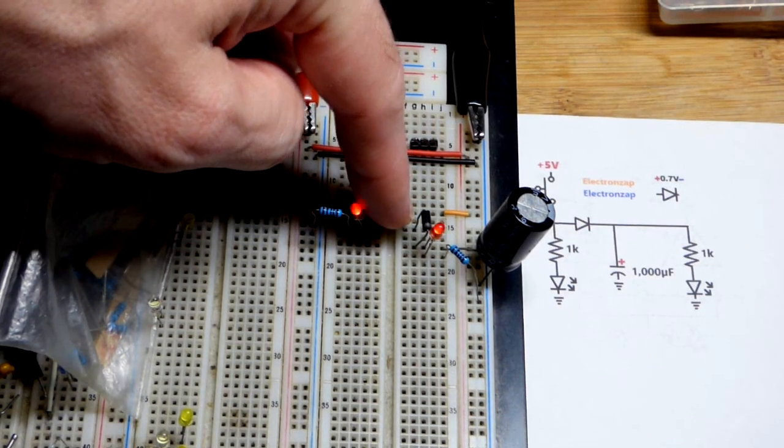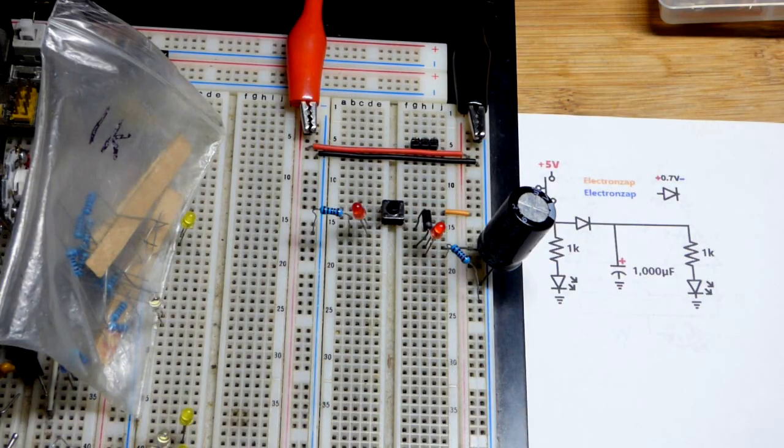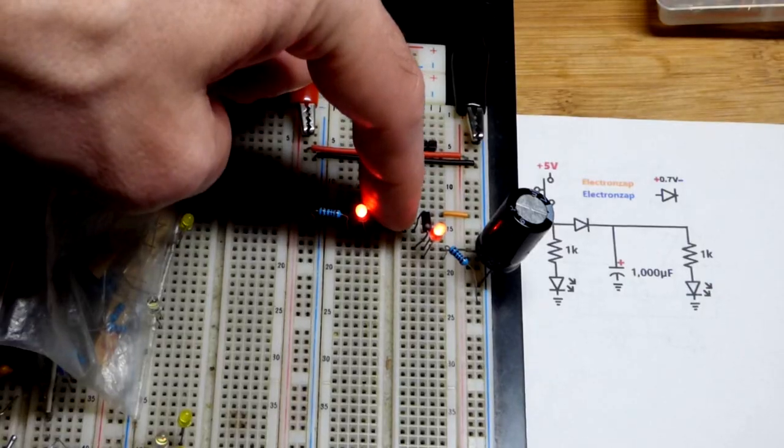So now sometimes you might have a switch that you want to be able to control two circuits, but you don't want those two circuits to influence each other. This will work better if I dim the lamp.